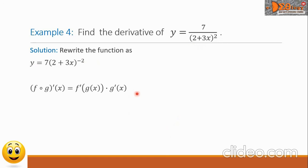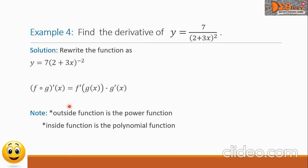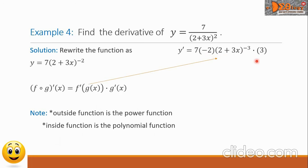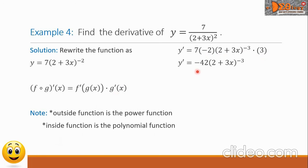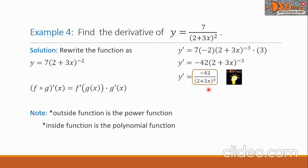Then, let us write the formula for the chain rule. The outside function is the power function and the inside function is the polynomial function. Taking the derivative, we multiply the constants to get negative 42 times the quantity 2 plus 3x all raised to negative 3. Rationalizing the negative exponent, the final answer is negative 42 all over the quantity 2 plus 3x all raised to 3.